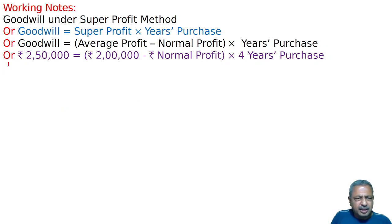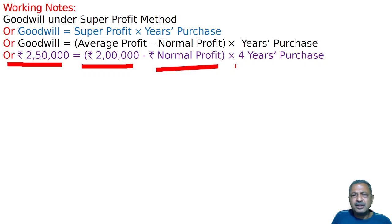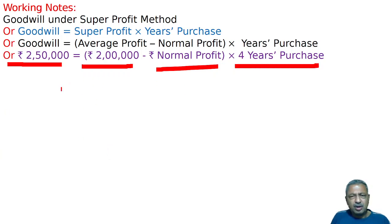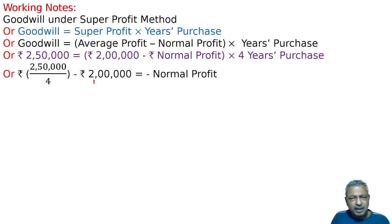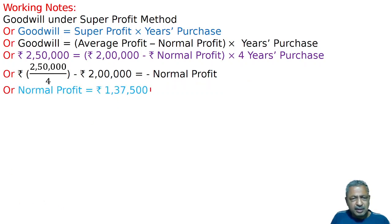The Goodwill is available at Rs. 2,50,000 at 4 years purchase. So super profit is equal to 2,50,000 divided by 4, minus 2,00,000 equals normal profit. Calculating this, normal profit is Rs. 1,37,500.